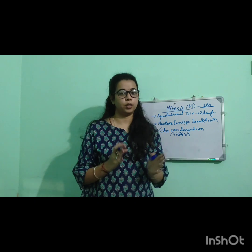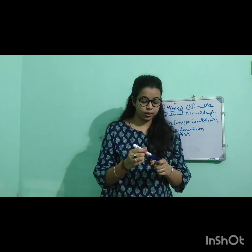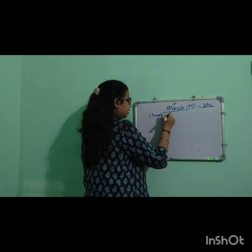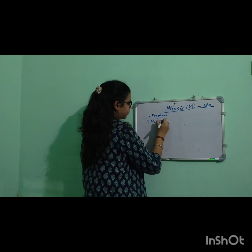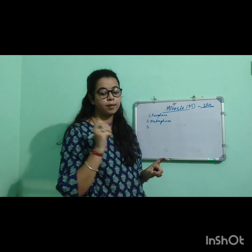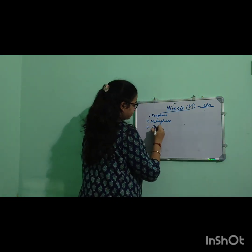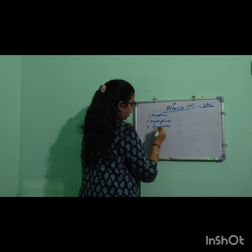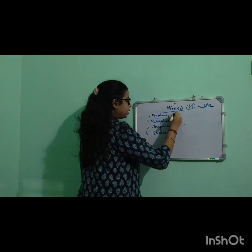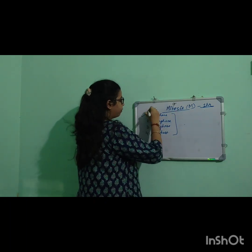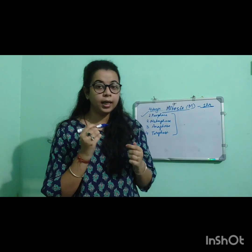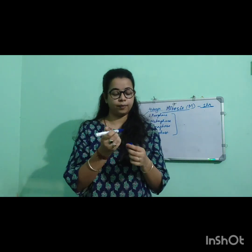The process of mitosis is divided into four main stages: prophase, metaphase, anaphase, and telophase. These are the four stages of mitosis, and in each step we will discuss what processes are happening. I will highlight the key points in each stage.